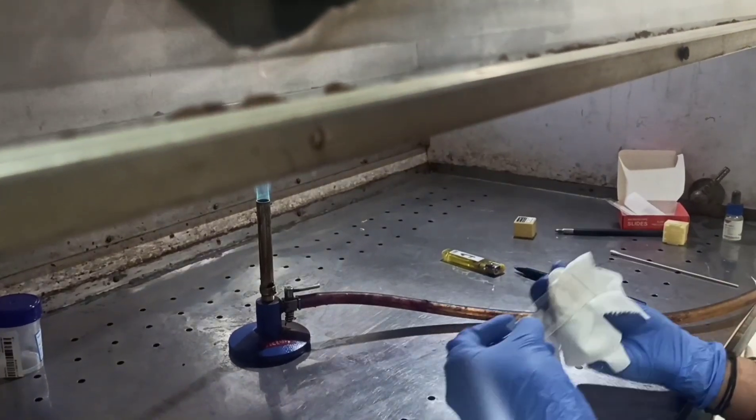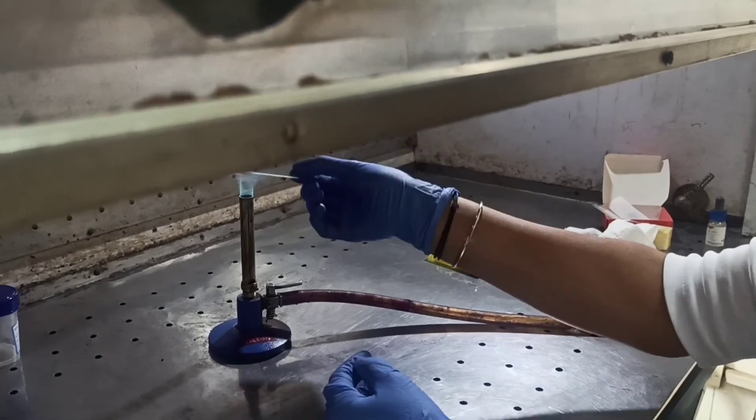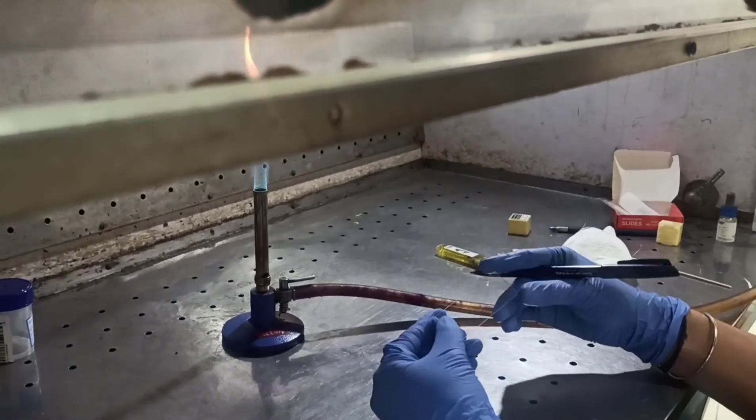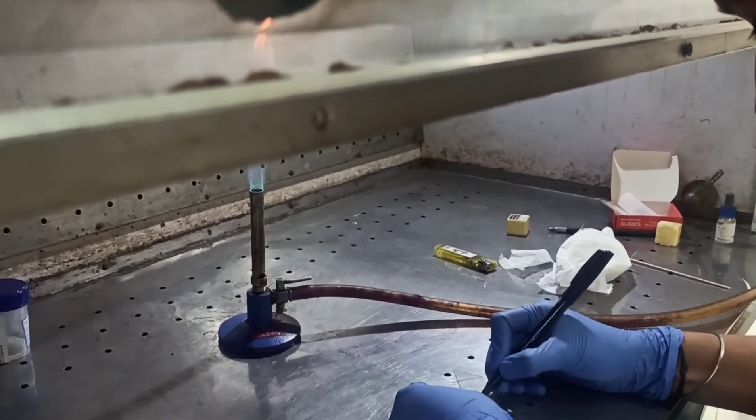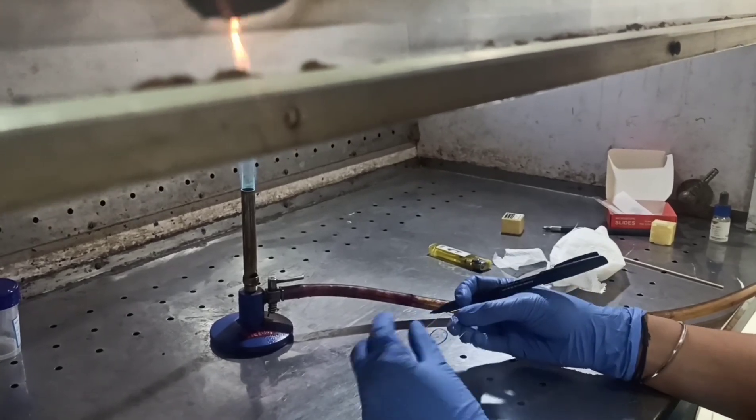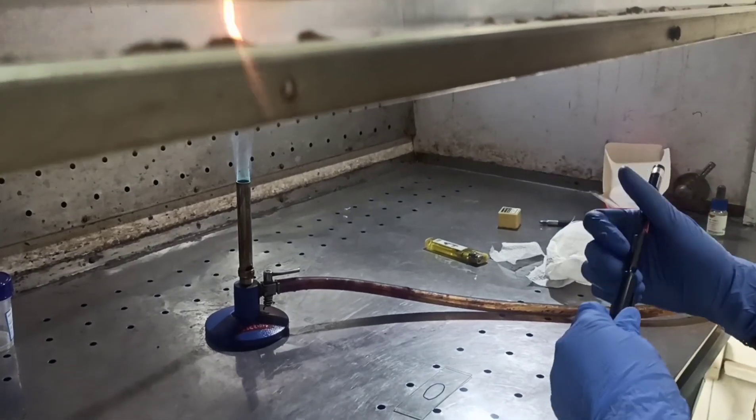Take a grease-free clean slide. Pass it to and fro on the flame and make it free from any residual bacteria. Mark with a marker beneath the slide and cover an area of about 1 cm circle to specify the area of smear.